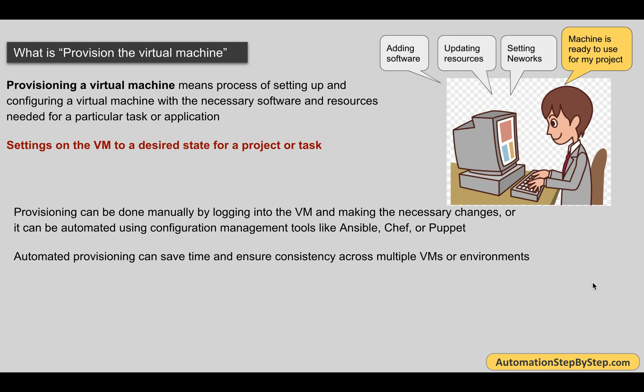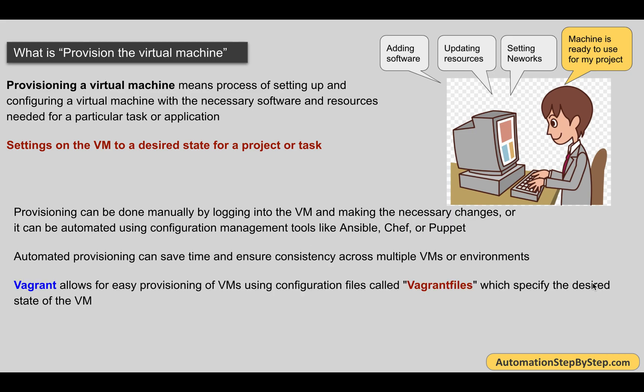I hope now you understand what we mean by provisioning of a virtual machine. When we come to Vagrant, Vagrant is a tool that allows you to provision virtual machines using a file called the Vagrantfile. In this file, we can put all the instructions — all the things we want to do on the virtual machines, like installing software, updating things, etc. When we run a Vagrant command, it will read all these instructions and set up the virtual machine accordingly.